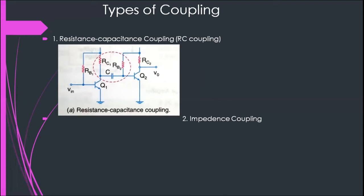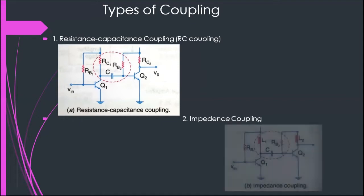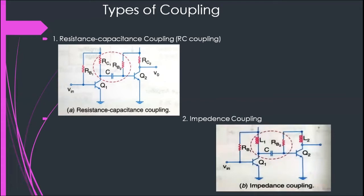We have another type called impedance coupling multi-stage amplifier. Here, there is no collector resistor. Instead, an inductor is placed at the collector of the first stage, and at the second stage also we have an inductor instead of a resistor. As the frequency increases, the inductive reactance of these inductors increases, and when the frequency increases very much, these inductors act as open circuits — they pass direct current but block AC signals to the next stage. These types of amplifiers are called impedance coupling amplifiers.